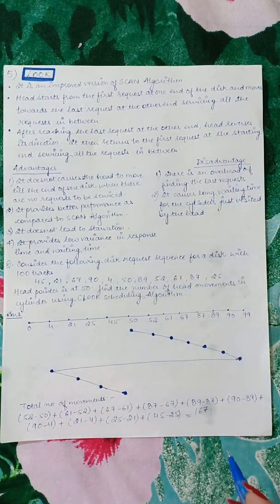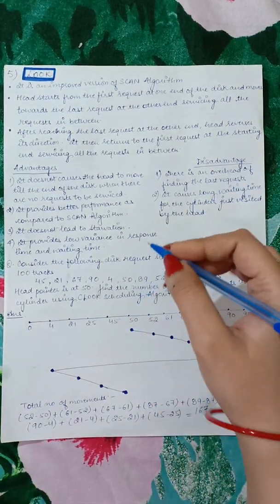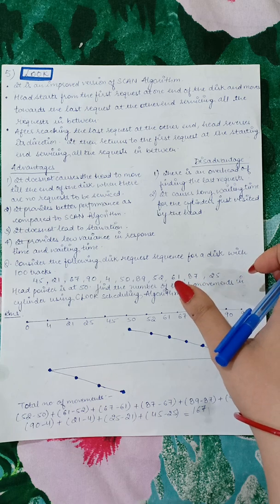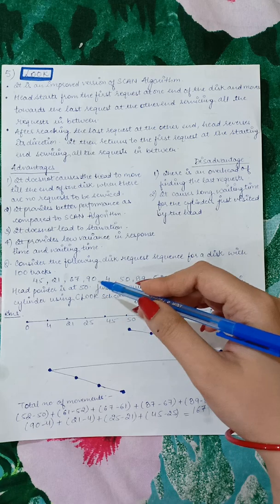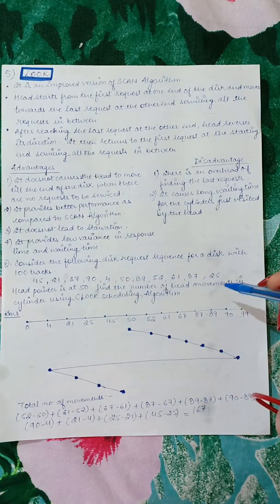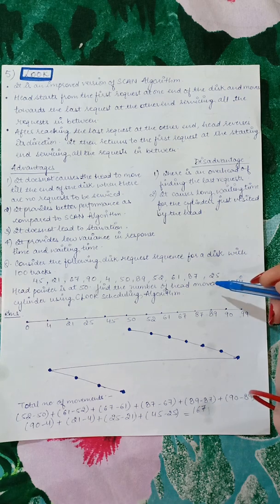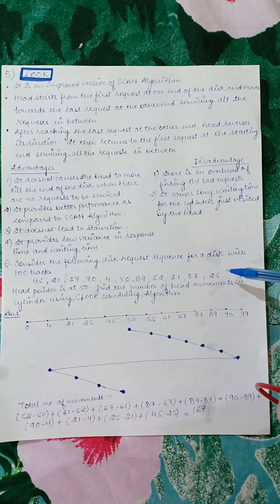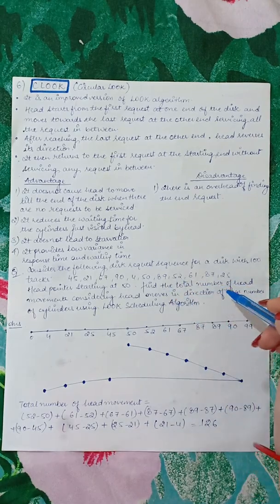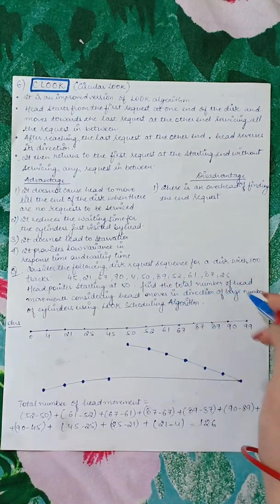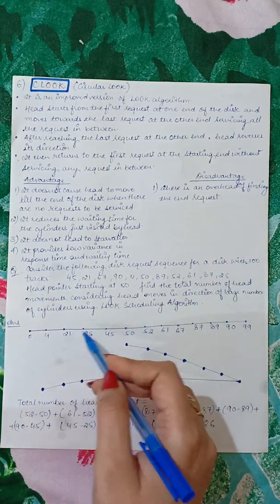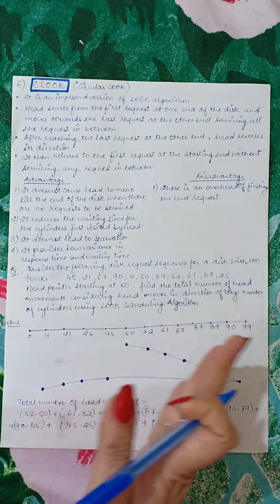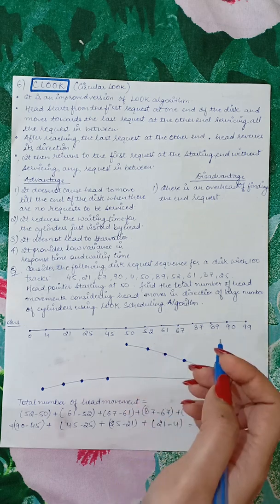Let's solve an example to understand the LOOK algorithm. Consider the following disk request sequence for a disk with 100 tracks: 45, 21, 67, 90, 4, 50, 89, 52, 61, 87, 25. The head pointer is at 50 and we need to find the total number of head movements using the LOOK scheduling algorithm. We label tracks from 0 to 99. The head is at 50 and moving in the direction of increasing cylinder numbers.